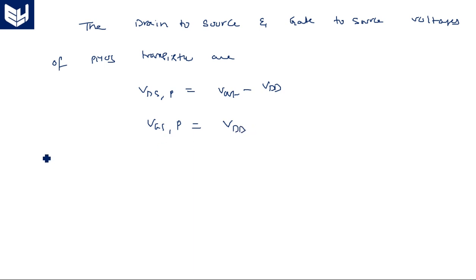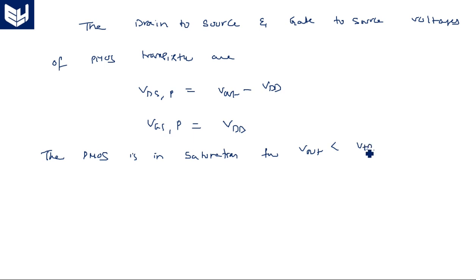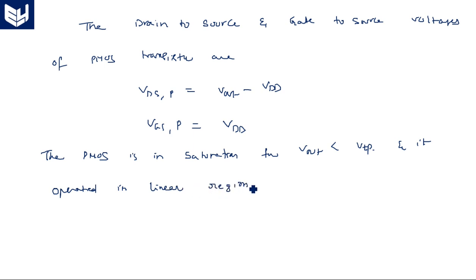Consequently, the PMOS transistor is in saturation for V-out less than VDP, and it operates in linear region for V-out less than VDP. The NMOS is in saturation region only, but the PMOS transistor operates in linear region.